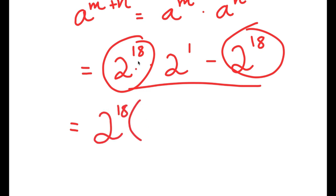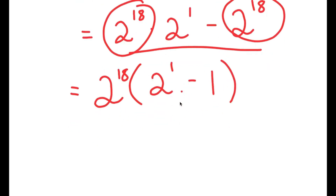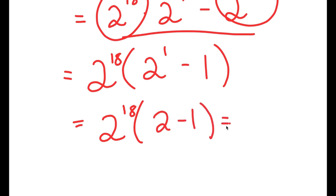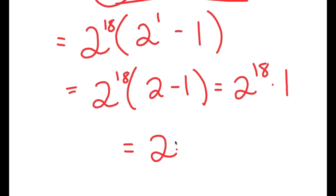Because I have two terms with the same factor, I can factor out 2 to the power of 18. So I get 2 to the power of 18 times (2 to the power of 1 minus 1). This equals 2 to the power of 18 times (2 minus 1), which equals 2 to the power of 18 times 1, which equals 2 to the power of 18. So my answer is 2 to the power of 18.